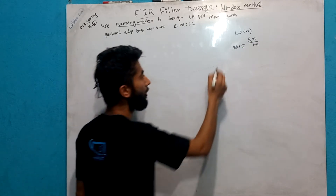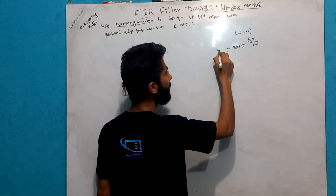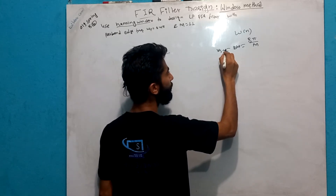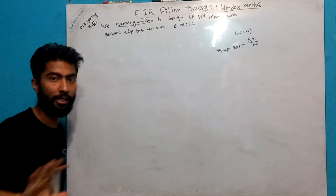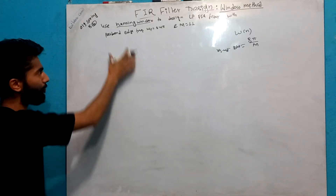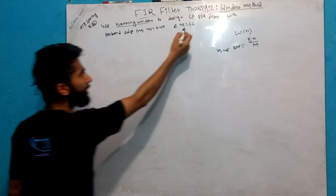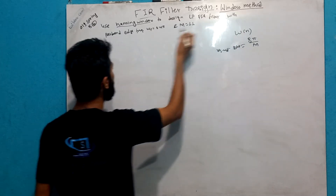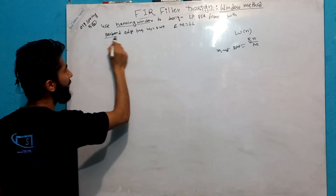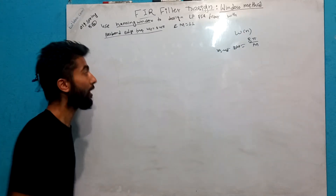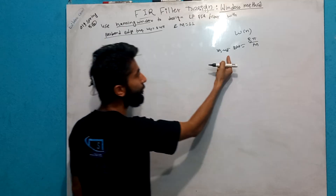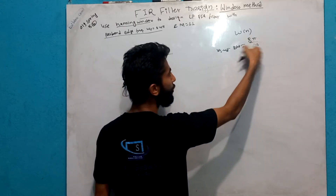Delta W equals ws minus wp. The filter has one band, which is a frequency band. Omega p is given by the function in this example.